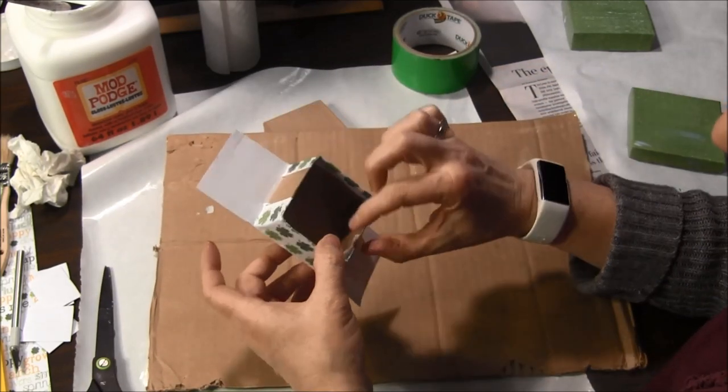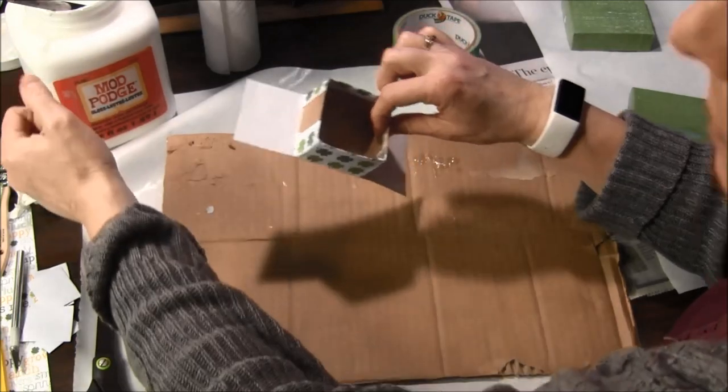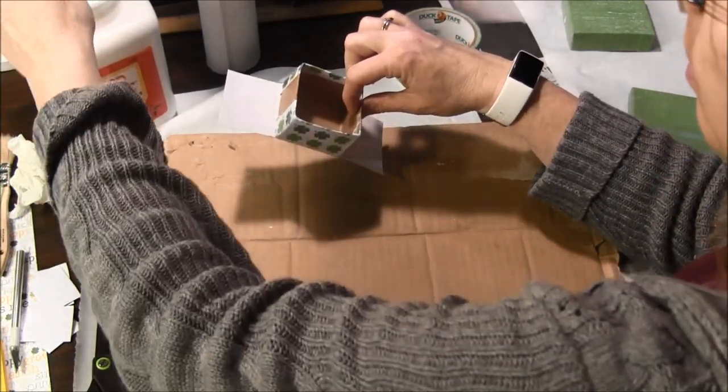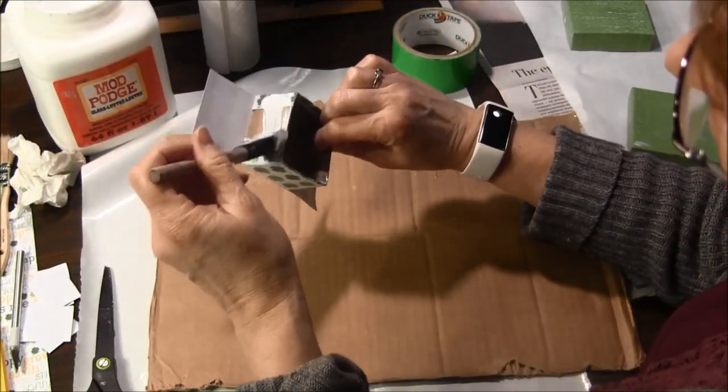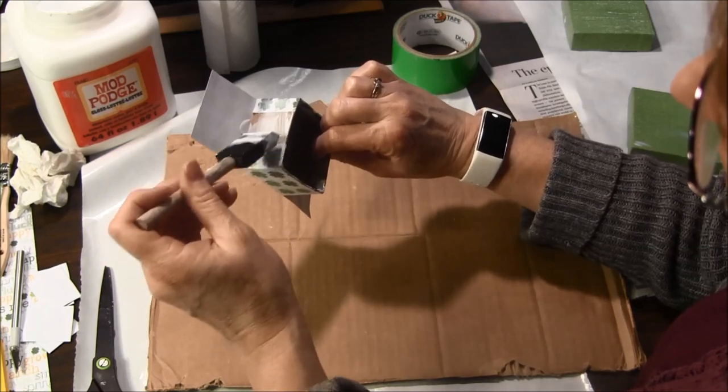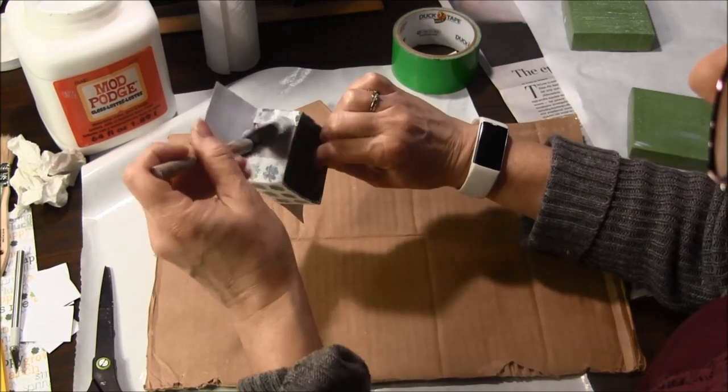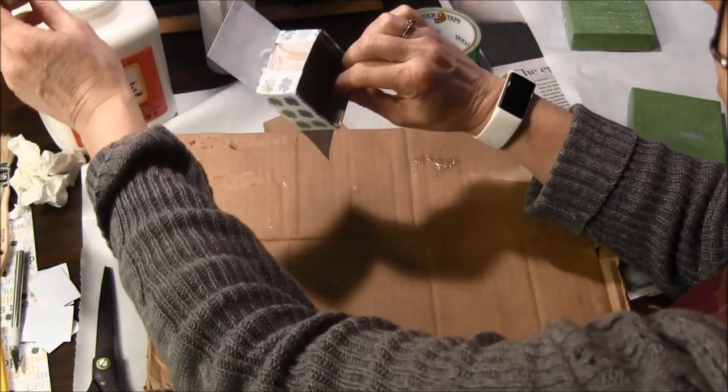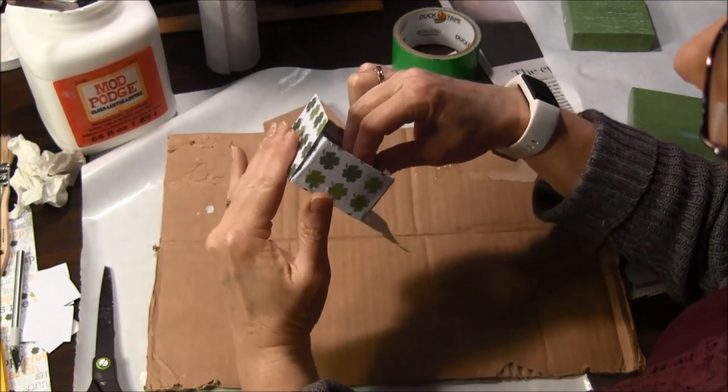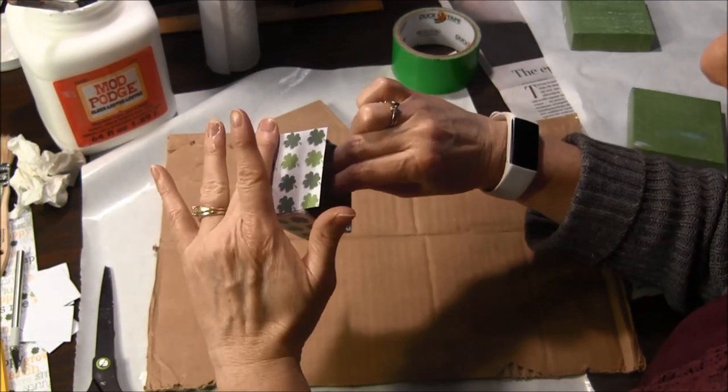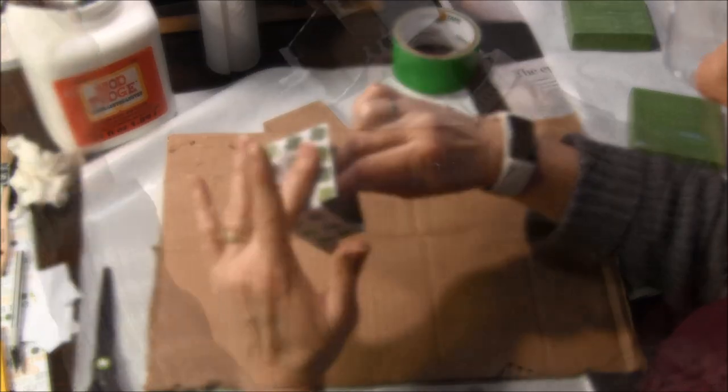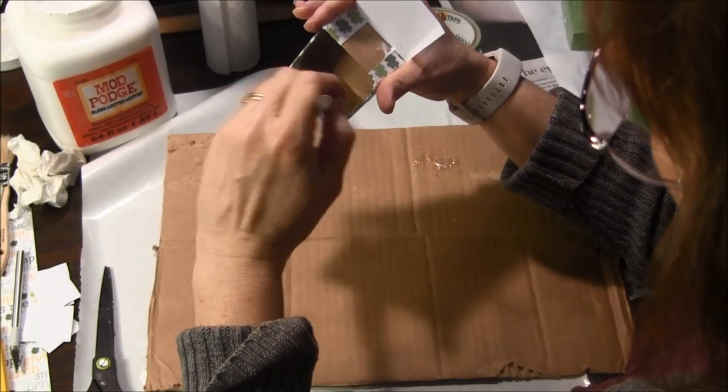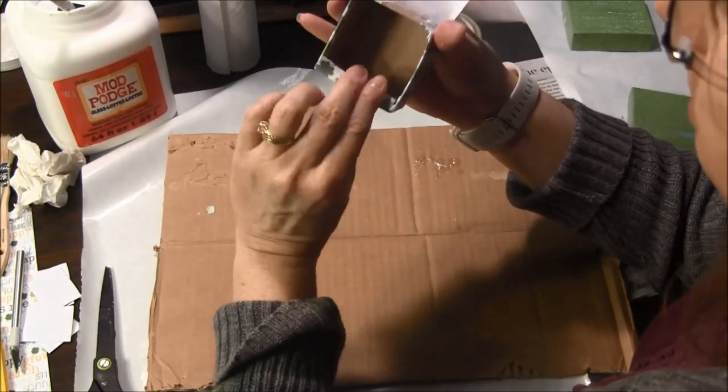The next is to do the last two sides. So now I'm just going to put the Mod Podge over top of the whole thing, even the folded over parts. And I'm going to smooth this up. Then I'm going to wrap this around to the inside.